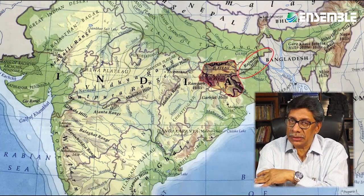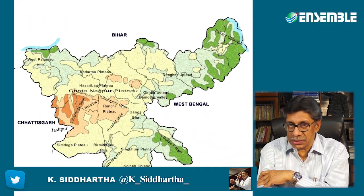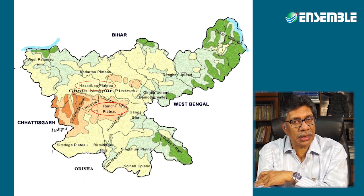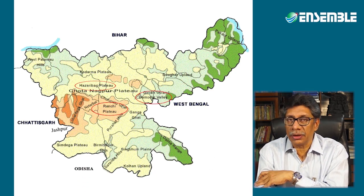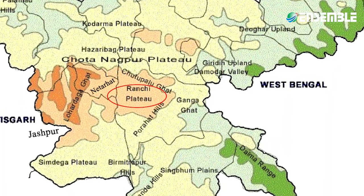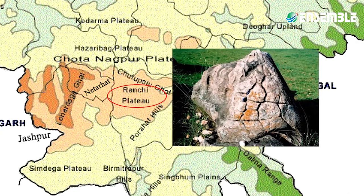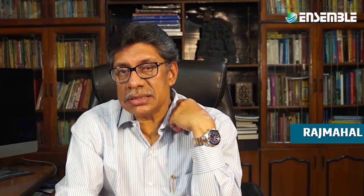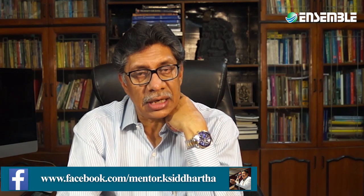The Chhotanagpur Plateau is demarcated on the North East by the Rajmahal Hills. It is divided into two sections: the Hazaribagh Plateau in the North and the Ranchi Plateau in the South, both separated by the Damodar Rift Valley. The topography of the Ranchi Plateau is mostly made of rounded hills of massive granite, called exfoliation domes. On the North East, the Rajmahal Hills demarcate the Chhotanagpur Plateau, and these hills are capped by lava flows, dissected on the northern edge to produce scarp-like features.